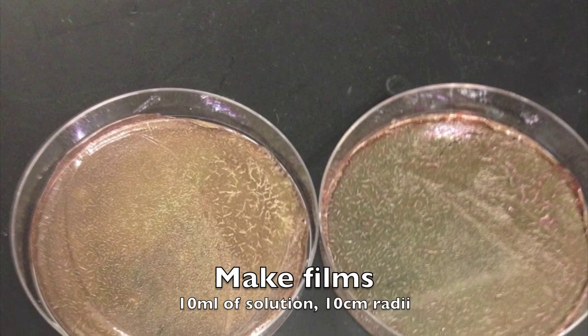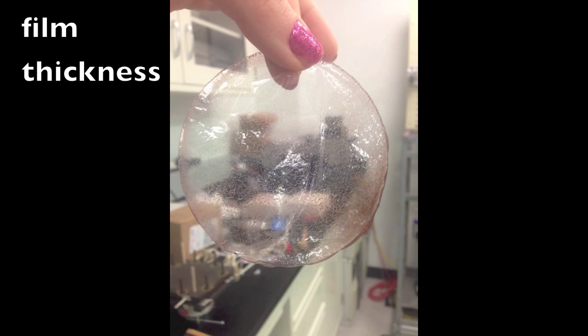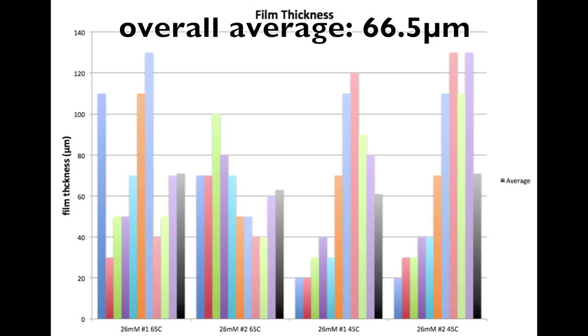The solution was then poured into petri dishes and left to dry overnight to make a film, which was then analyzed for the various film thicknesses. We took various measurements and the average film thickness came out to be around 66 microns, which is not too far from what our design goal is.